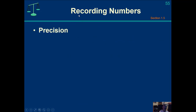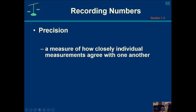We've also got the concept of recording numbers. Two concepts to become familiar with: precision, which is the measure of how closely an individual measurement agrees with another measurement of the same thing. If you do the same experiment three times — three is generally the minimum — how closely those individual measurements agree with one another determines the precision in your recording.